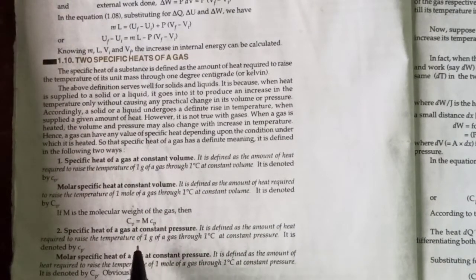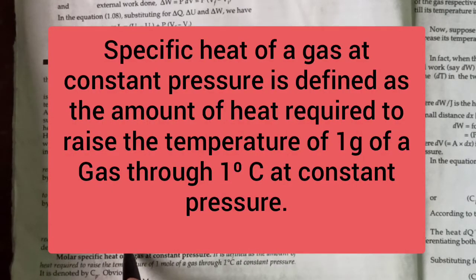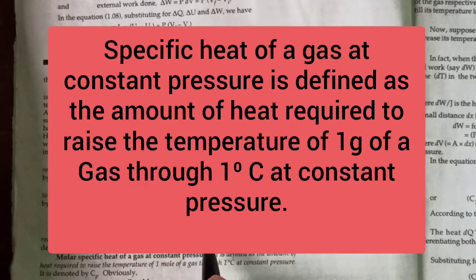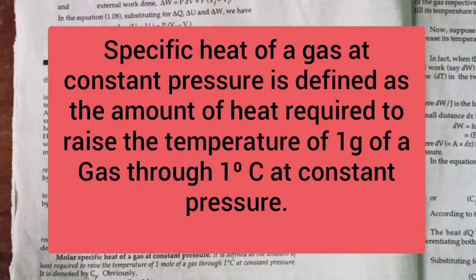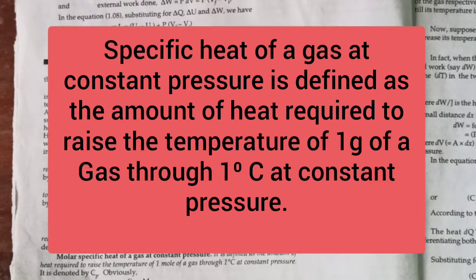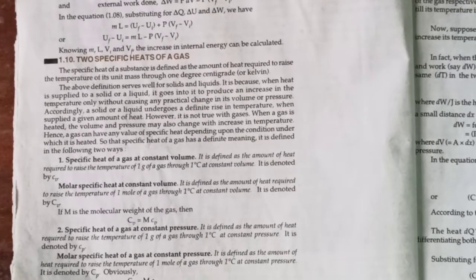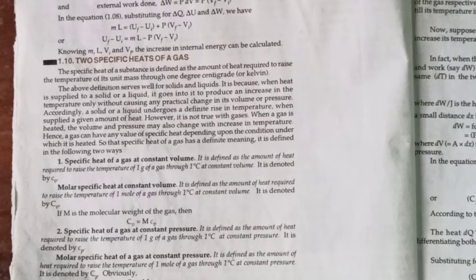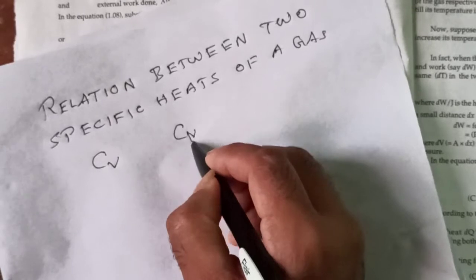Now, what about constant pressure? At constant volume the volume remains fixed, while at constant pressure the volume can expand. The specific heat of gas at constant pressure is defined as the amount of heat required to raise the temperature of 1 gram of gas by 1 degree centigrade at constant pressure. This is denoted as Cp.